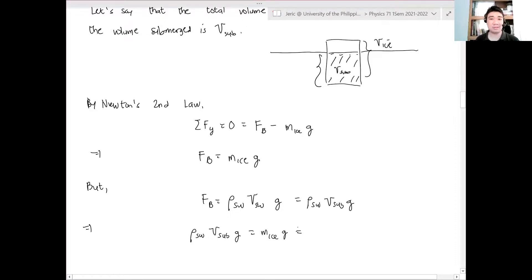But what is the mass of ice? How is it related to the density of ice? This is just equal to what? Density multiplied by the volume. Yes, this is just, therefore, density of ice multiplied by the volume of ice times g.